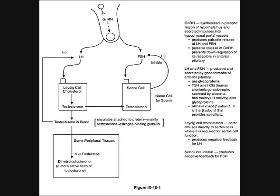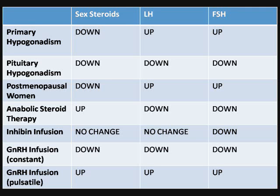Here is an excellent high-yield table for the boards and for medical residents or physicians reviewing the male reproductive system hormones. For primary hypogonadism, there is no secretion of hormone: sex steroids are decreased, LH is increased due to the lack of negative feedback, and FSH is increased.